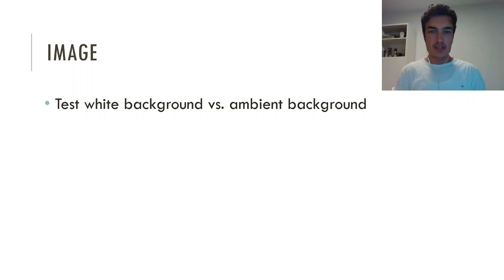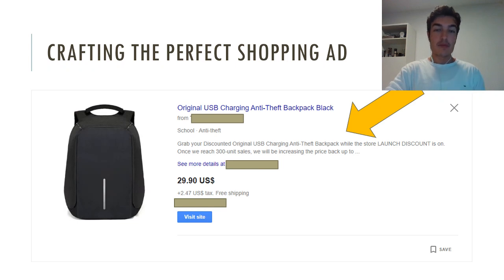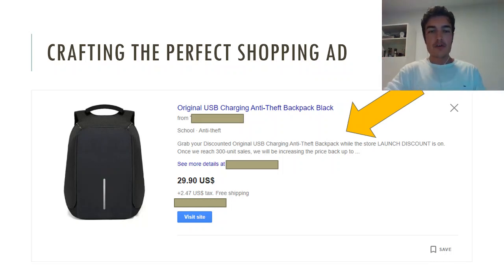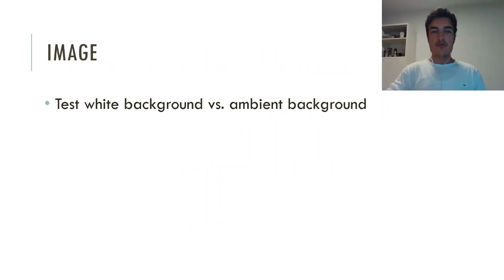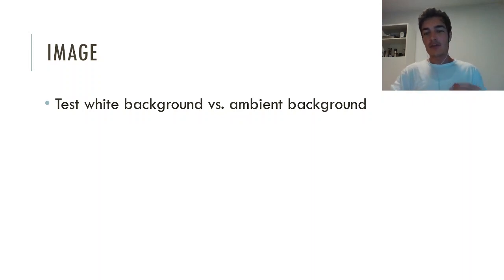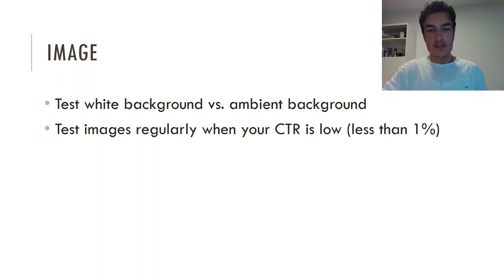Let's start with the image. Most of the time you're simply using the first image you have on your product listing on Shopify or whatever shop system you use. What you should do is test white background images versus ambient images. Ambient images can be, for example with this anti-theft backpack, someone using the backpack or the backpack somewhere outside where it looks quite nice. We want to show the product in an actual environment — this is especially useful for furniture or clothing. We want to make sure the customer can see what it looks like in a normal environment where the product is used.